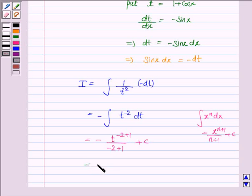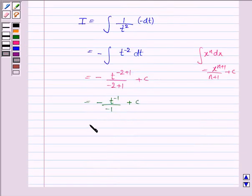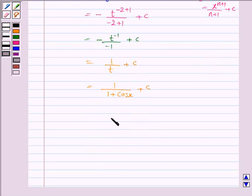So this is equal to minus t to the power minus 1 upon minus 1 plus c. This is again equal to 1 upon t plus c. Now t is 1 plus cos x. Substitute it. Hence the integral of the given function is 1 upon 1 plus cos x plus c.